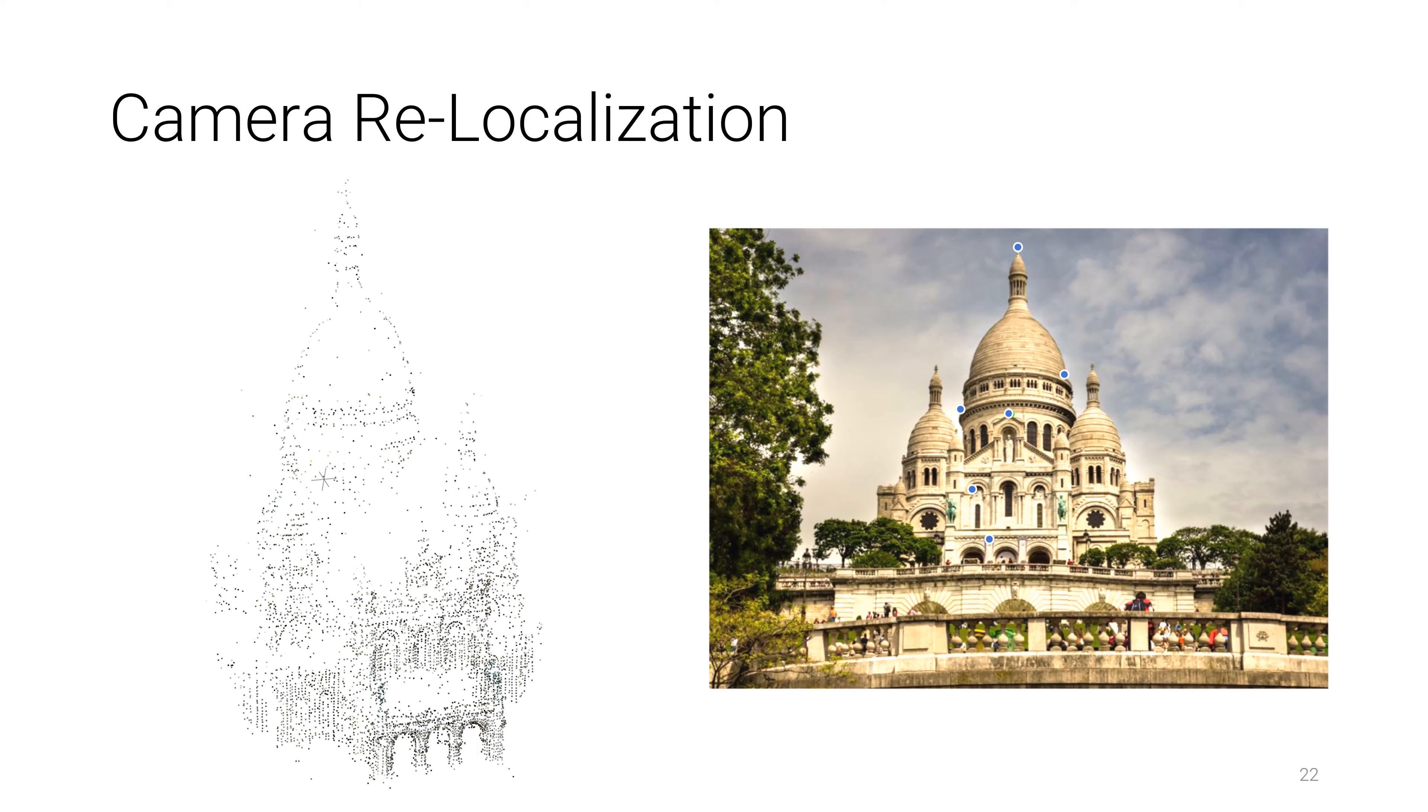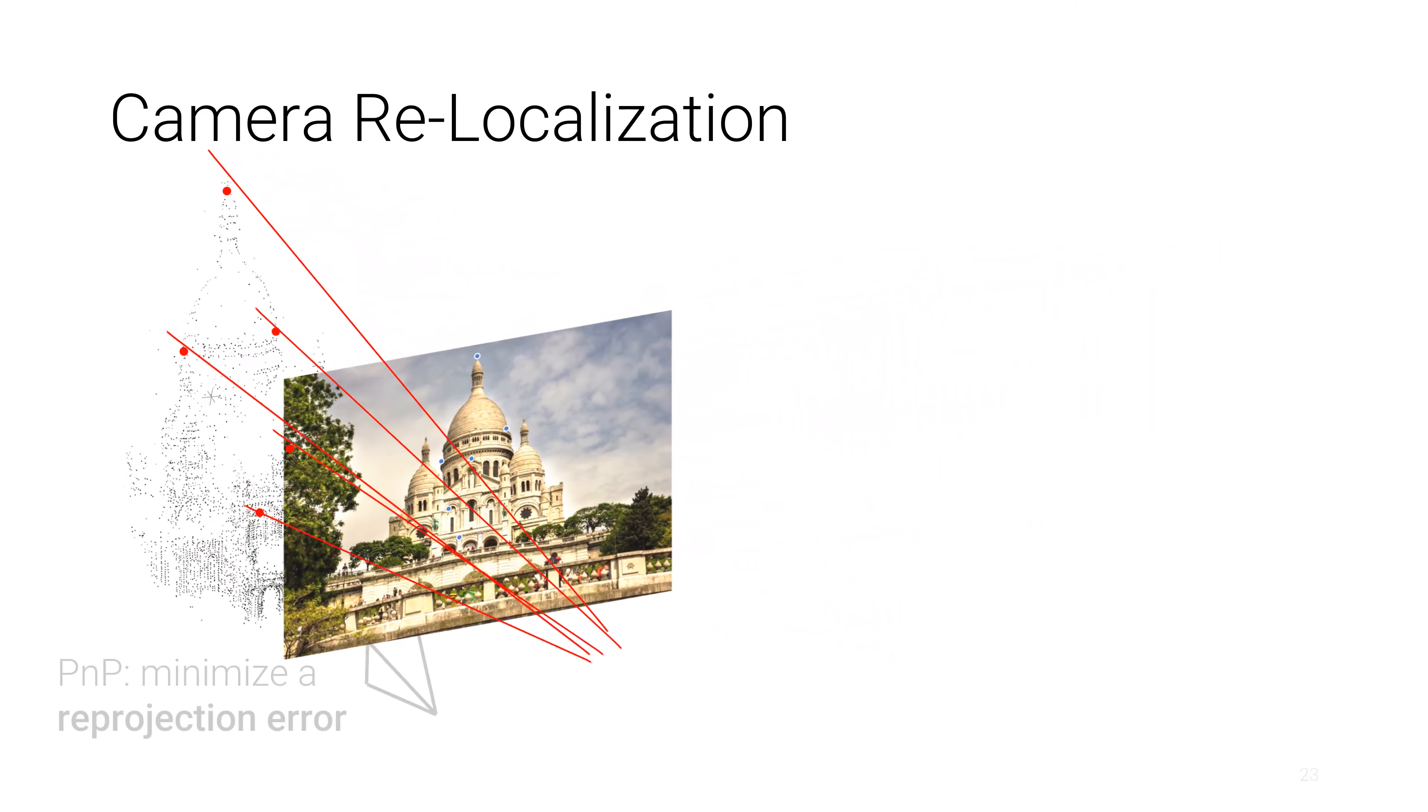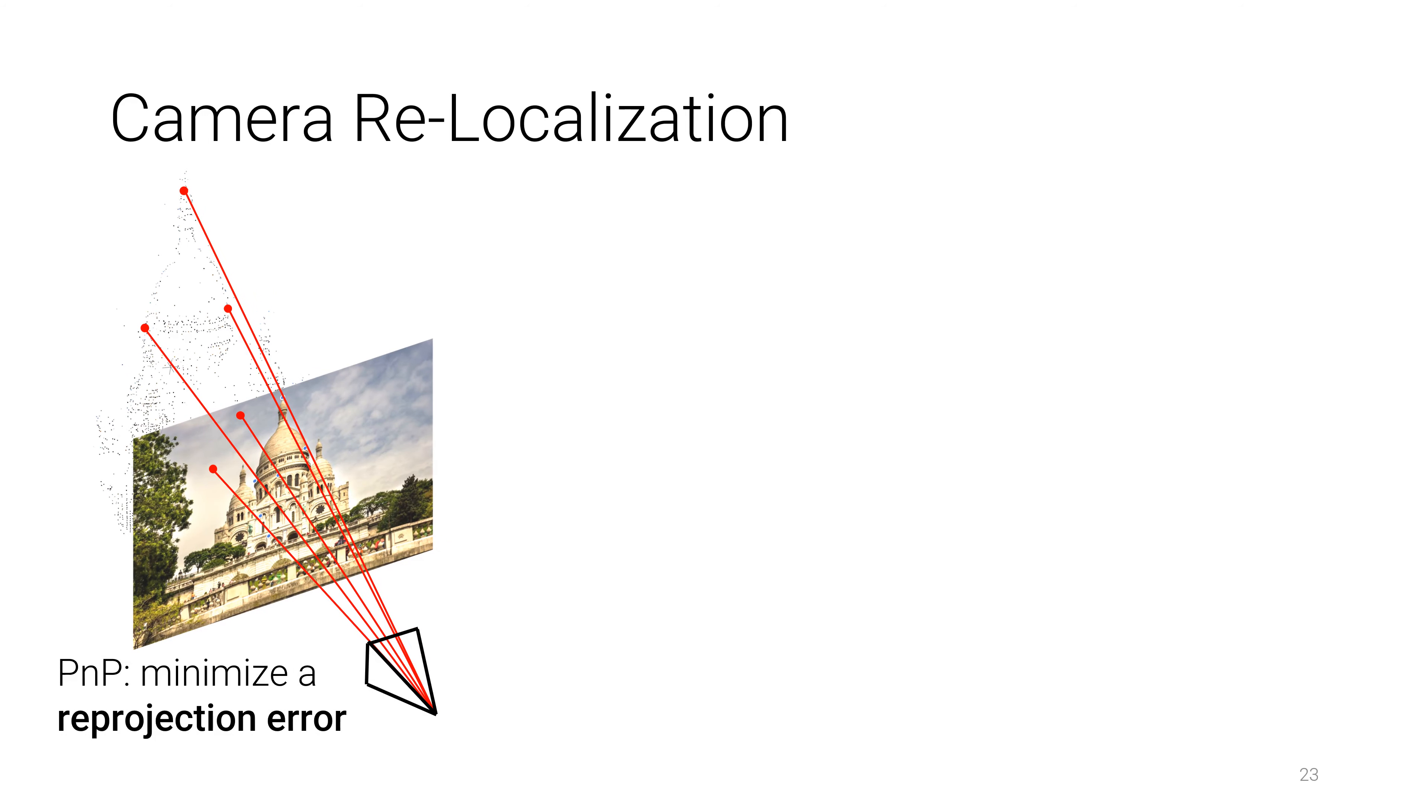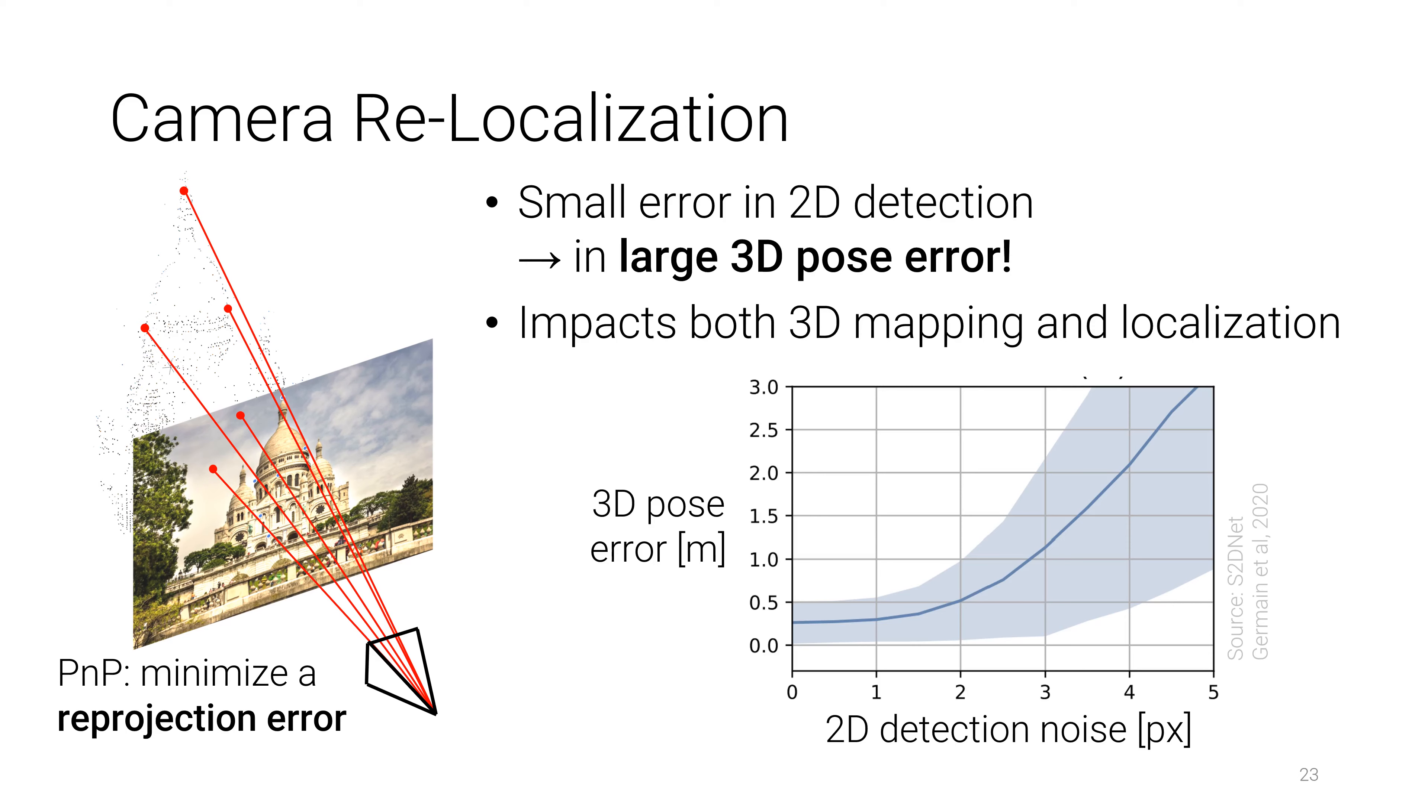Noisy keypoints also impact subsequent tasks such as camera relocalization, where we estimate the 6DOF pose of an unknown image with respect to an existing 3D model. Detections in the query image which are just a few pixels off can result in large pose errors. The same applies to noisy 3D models.